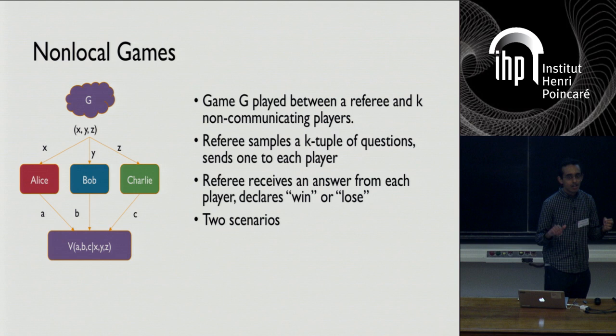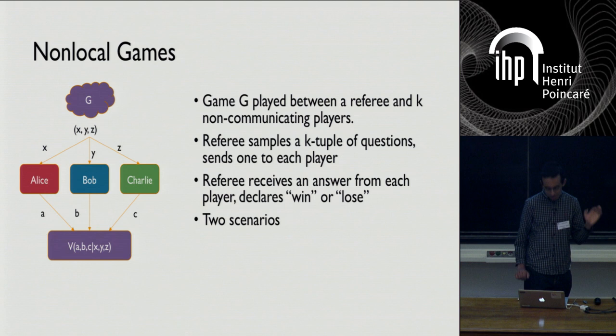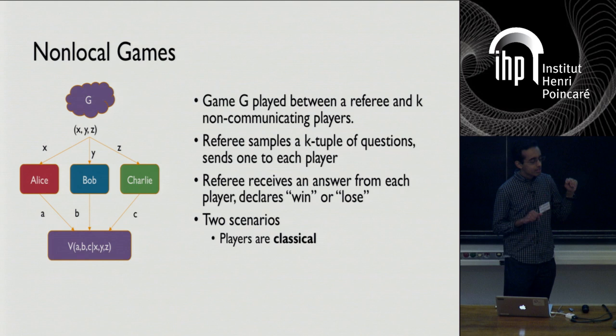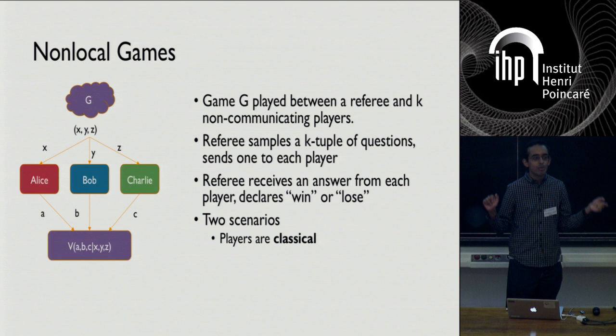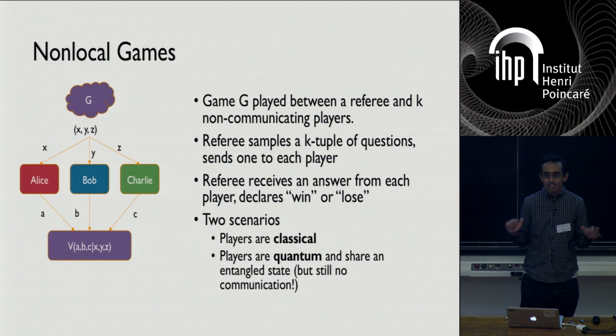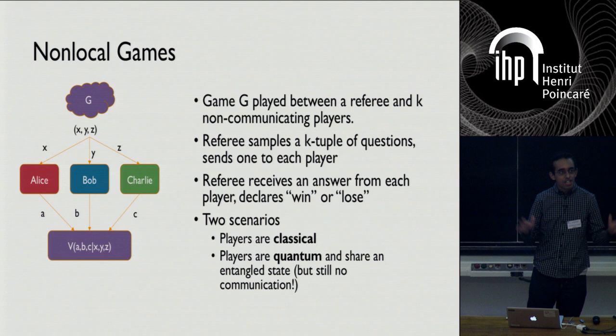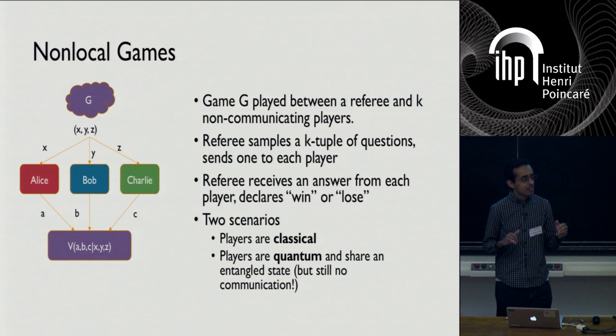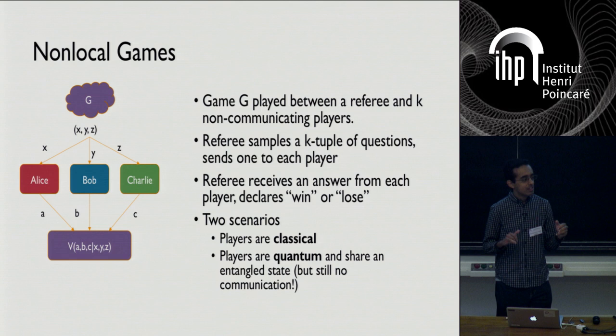The players are trying to win with the highest possible probability over the choice of questions. There are two scenarios of interest. In the classical case, players can agree on a strategy beforehand and share random bits, but they can't communicate. In the quantum case, players still can't communicate, but they're allowed to share an entangled state of essentially any dimension, with no constraints on it, and they can make measurements during the game on their part of the entangled state only.